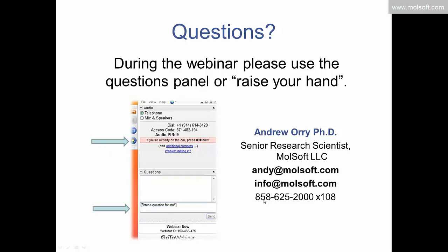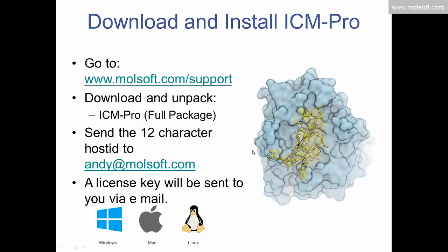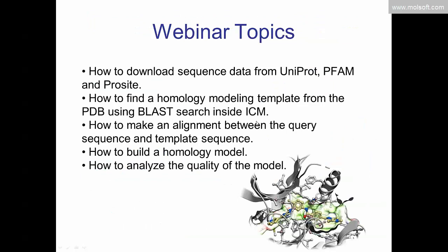If you have any questions after the webinar, please feel free to email or call. If you haven't done so already, you can request a copy of ICM Pro — a 30-day license key. Go to our MolSoft support site, download ICM Pro the full package, then open the software and you'll see a 12-character host ID. Email that to me and I can send you a key to activate the software. ICM runs on Windows, Mac, and Linux.